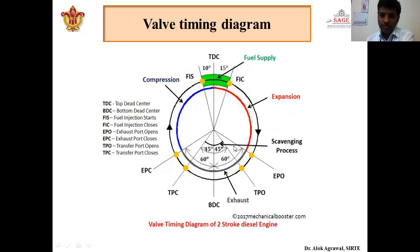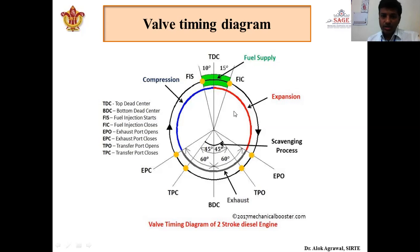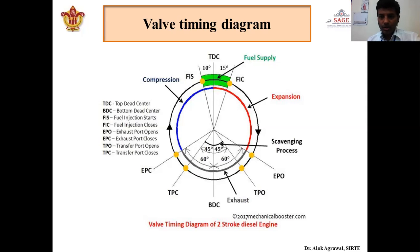Similarly for the valve timing diagram of the diesel engine, most things remain the same. The difference is that fuel injection is not an instantaneous process — it takes some time. Fuel injection starts 10 degrees before TDC and continues for 45 degrees of crankshaft rotation, closing 15 degrees after TDC. The rest of the port timings are the same as for the petrol engine. All the reasons why inlet port opens early and why exhaust port opens before BDC were already explained in the four stroke valve timing diagram discussion.